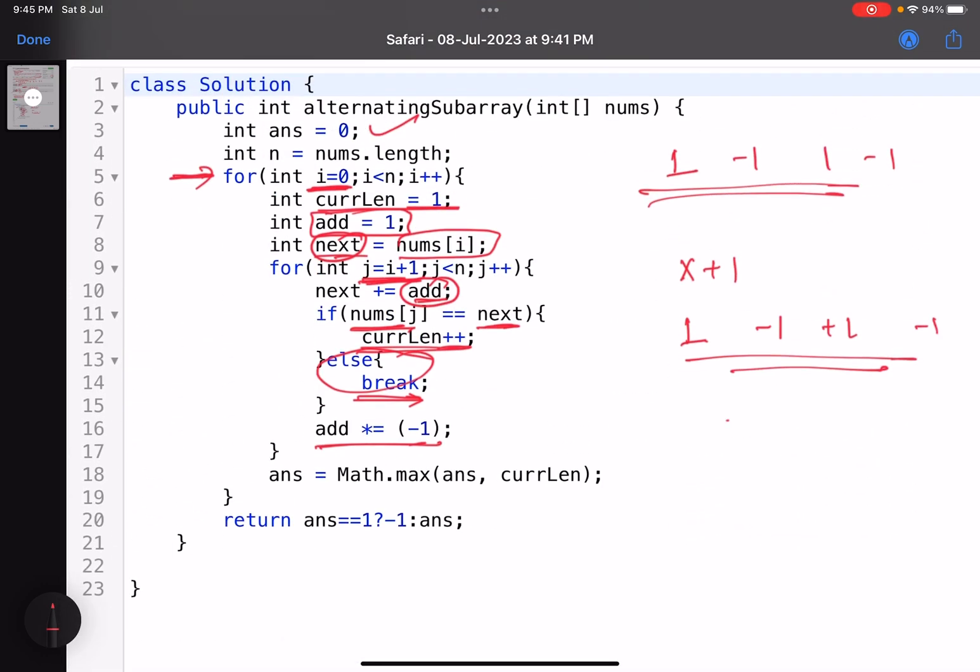So ultimately this is what we do: choose everything here, the starting position. If I just do a dry run, suppose [2,3,4,3,4] - this was my array. i is here, so I start with 2. The next element has to be 2 plus 1, that is 3. Yes, it is. The next element should be again 2 because add becomes minus 1. You break the loop, then you start from 3, this position. This is what we do - simple brute force, a couple of nested loops, and you get it.